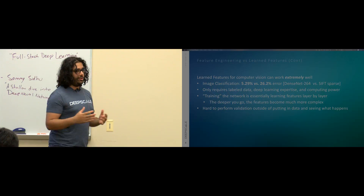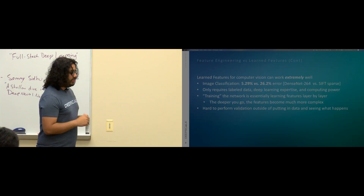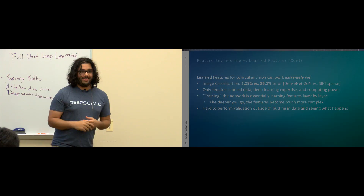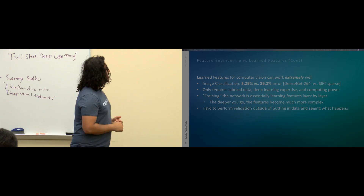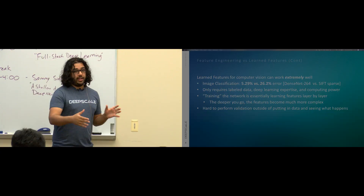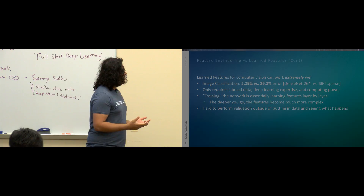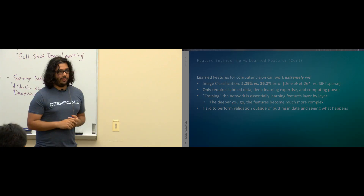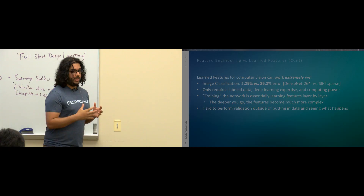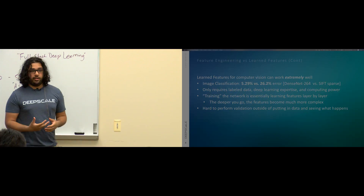To perform learned features, you need a lot of data, deep learning expertise, and a lot of computation power — unless you're us, of course. Essentially, training the network is just learning the features for every layer over iterations of the data. There are some downsides: one is validation. It's actually really hard to validate whether a deep learning network is doing what it's supposed to do, besides putting in data you didn't train on and seeing what happens. There's a lot of research on this.